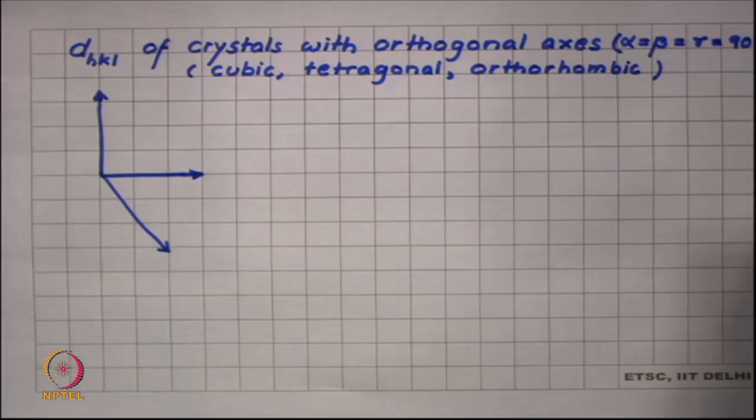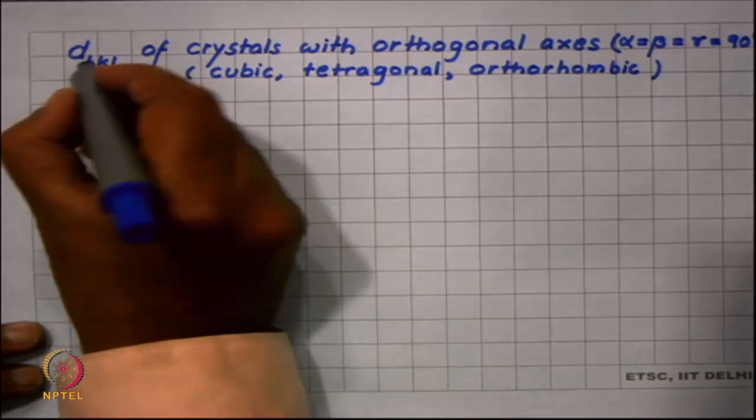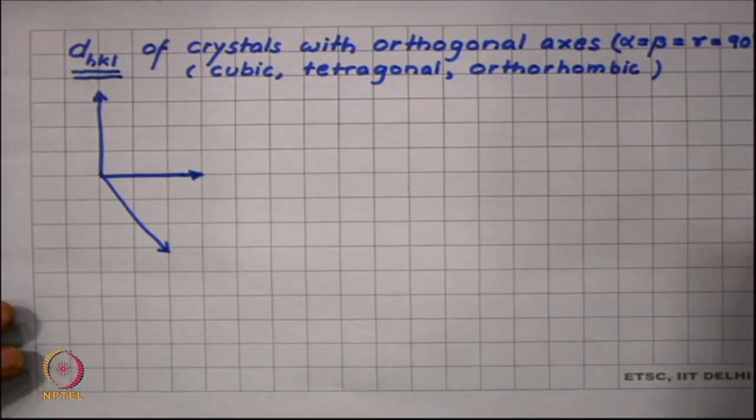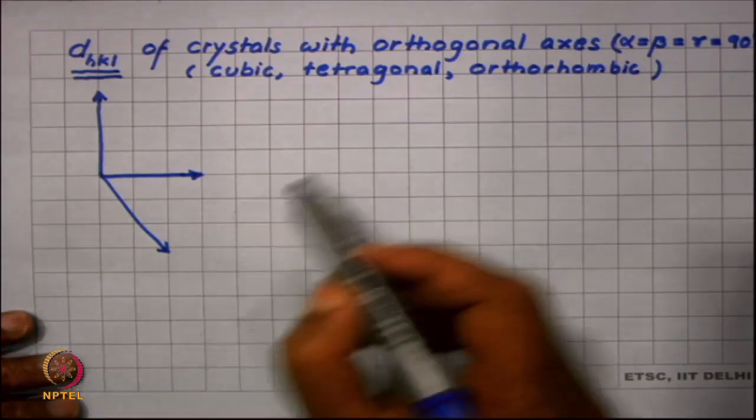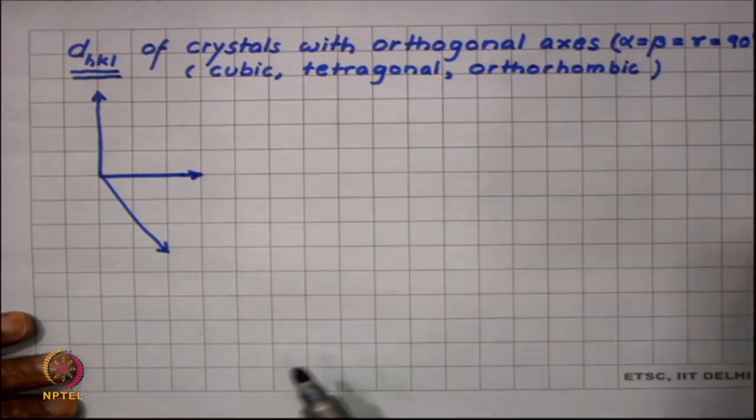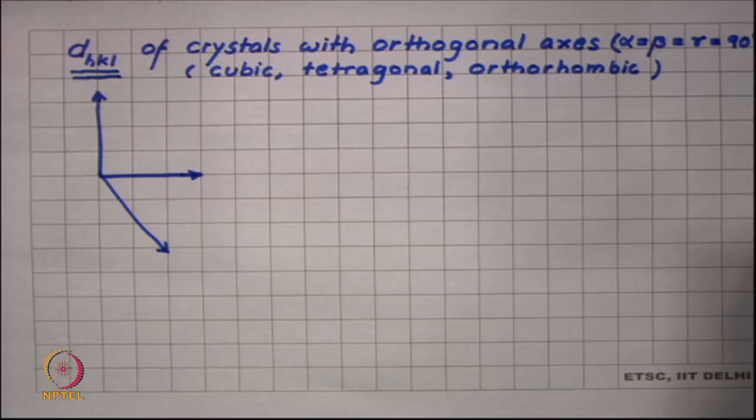Let us first look at d_hkl. You can derive formulas for d_hkl in the books for various crystal systems, but the geometry becomes very complicated for crystals which are not having axes which are orthogonal. We will derive this for the simple case where the axes are orthogonal.